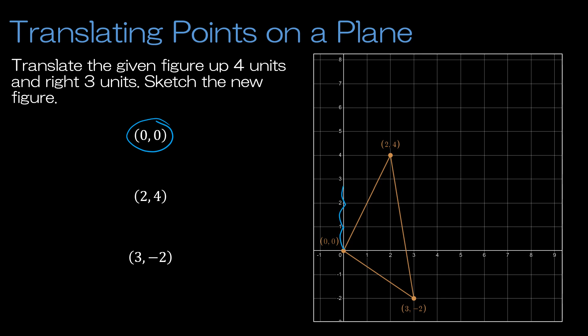then I'm going to go 1, 2, 3, 4 points up and 1, 2, 3 points to the right, and that's where my new point is. So just for clarity, I'm going to call this A, B, and C. So this new point was the translation of point A, and in mathematics we just call that A prime.